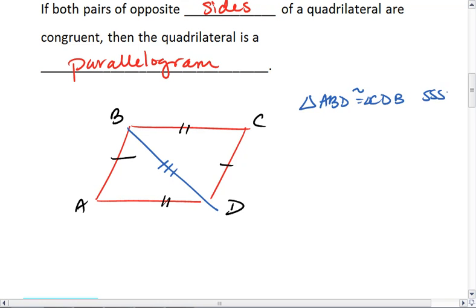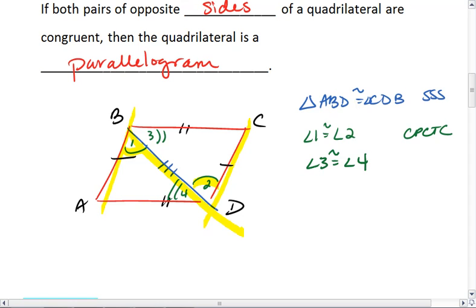If that's the case, then angle one is congruent to angle two by CPCTC, and angle three is congruent to angle four for the same reason. If angle one and angle two are congruent, we have two lines cut by a transversal where alternate interior angles are congruent. This means that those two lines AB and CD must be parallel, so AB is parallel to CD.